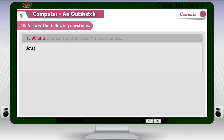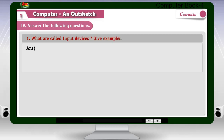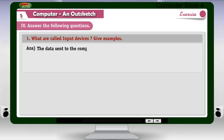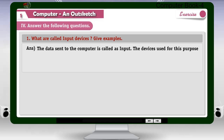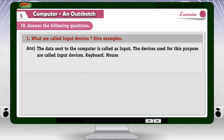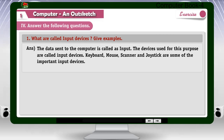Question 1: What are called input devices? Give examples. Answer: The data sent to the computer is called input. The devices used for this purpose are called input devices. Keyboard, mouse, scanner, and joystick are some of the important input devices.